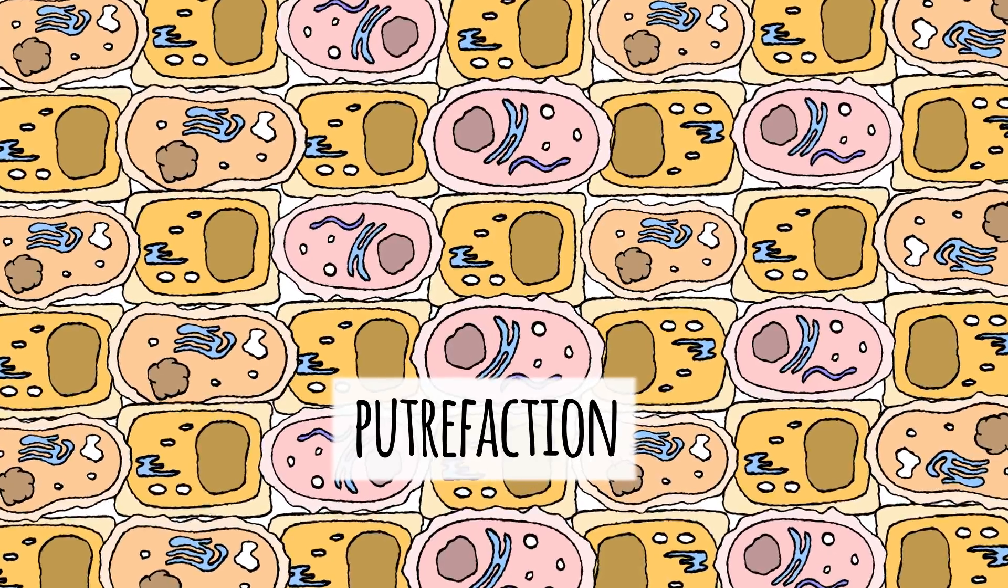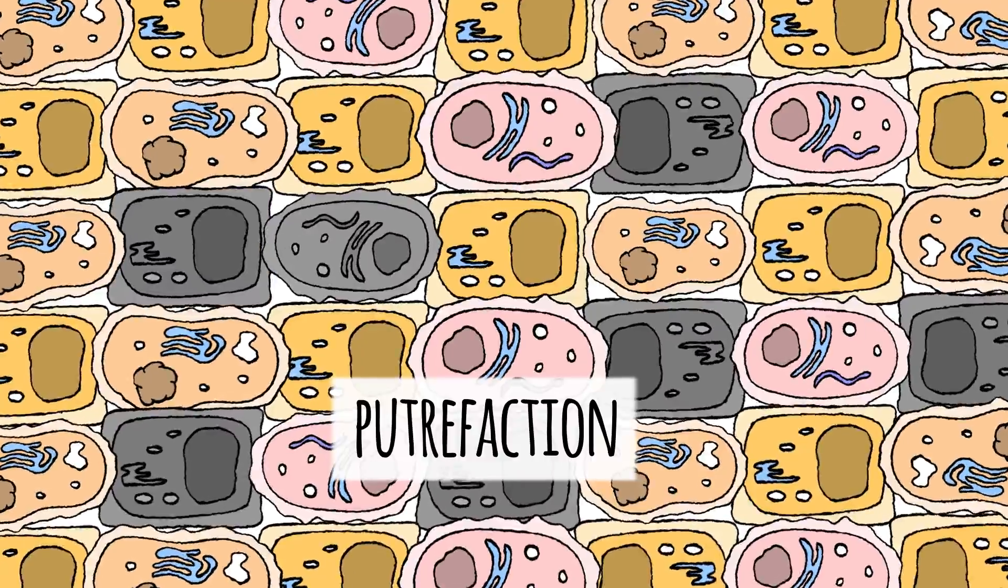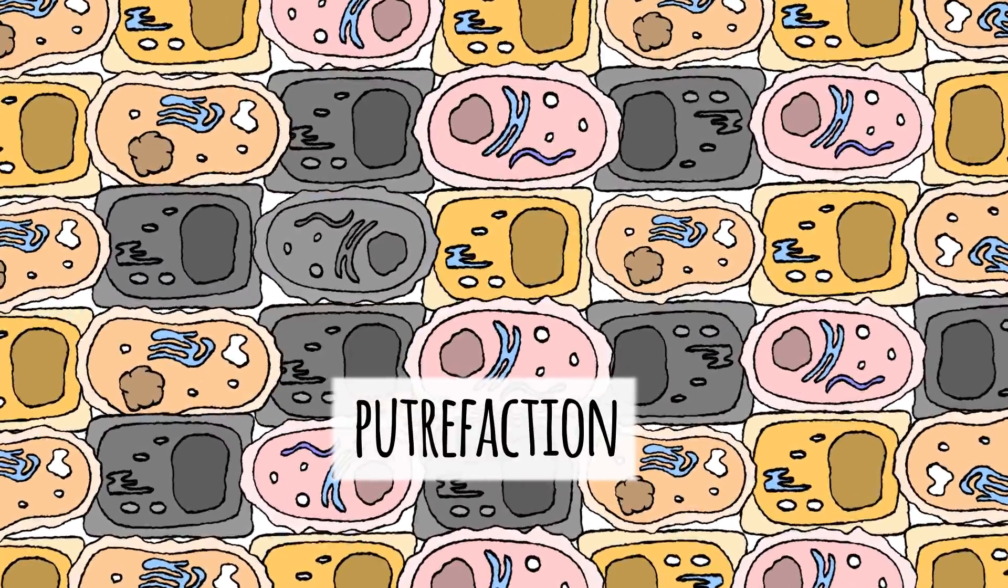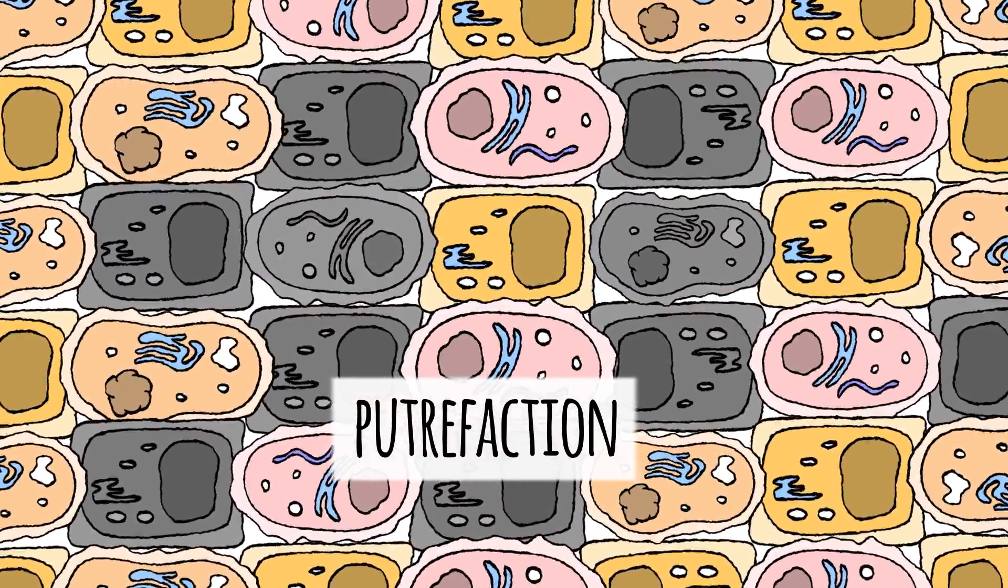Well, there's one way to know for sure if a person is dead: putrefaction. That's when the body's cells start to die off, and you start to look like something from an early 80s metal album cover.